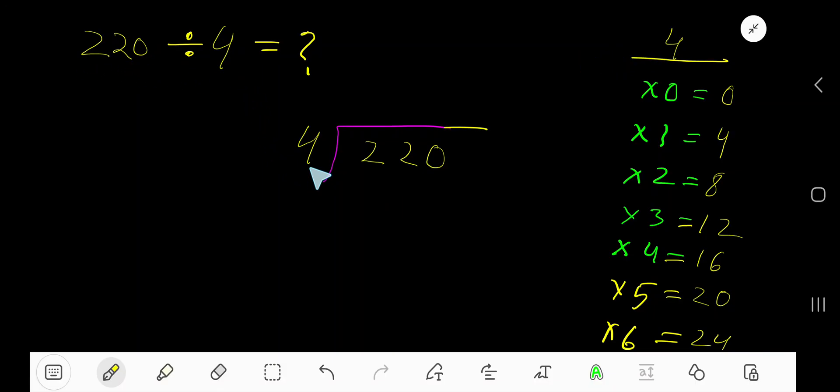220 divided by 4. Here 4 is the divisor, so we need the multiplication table of 4. 4 times 0 is 0, 4 times 1 is 4, 4 times 2 is 8, 4 times 3 is 12.